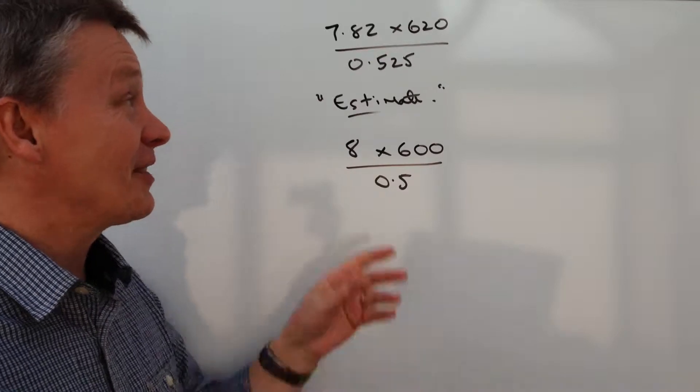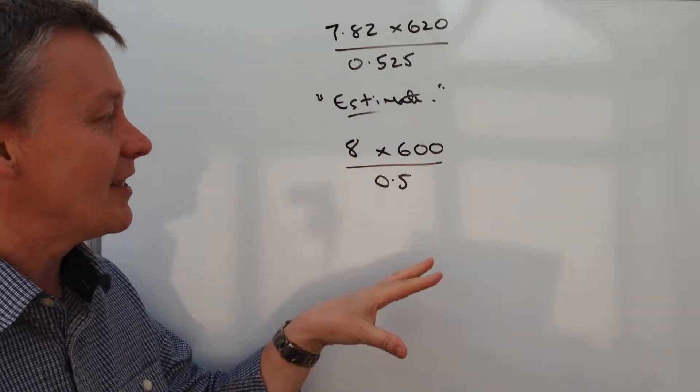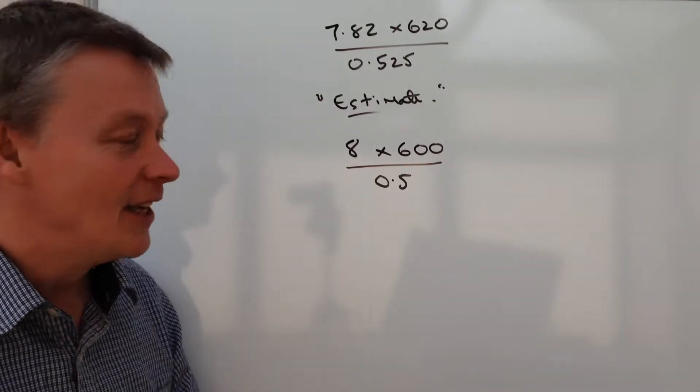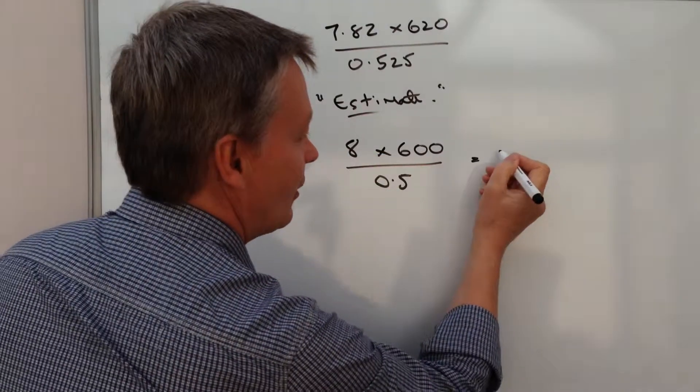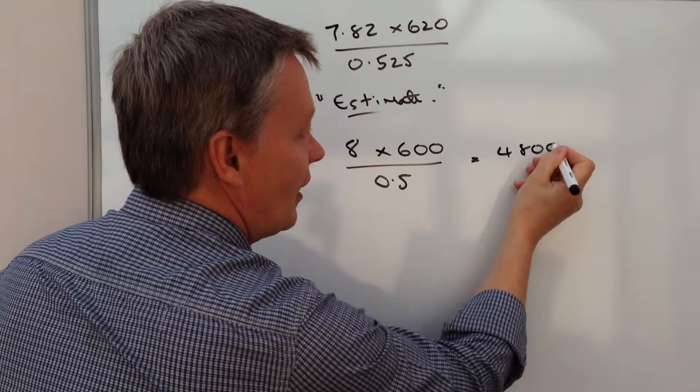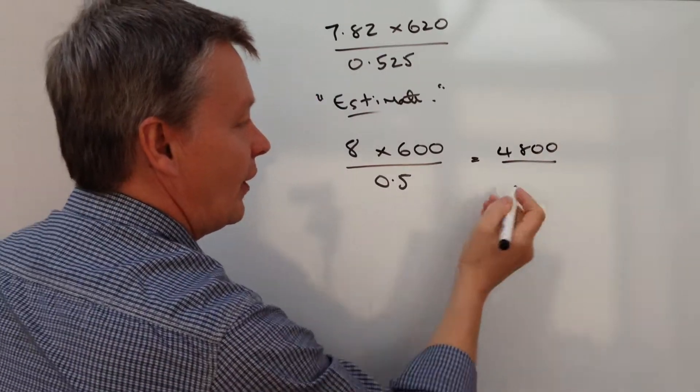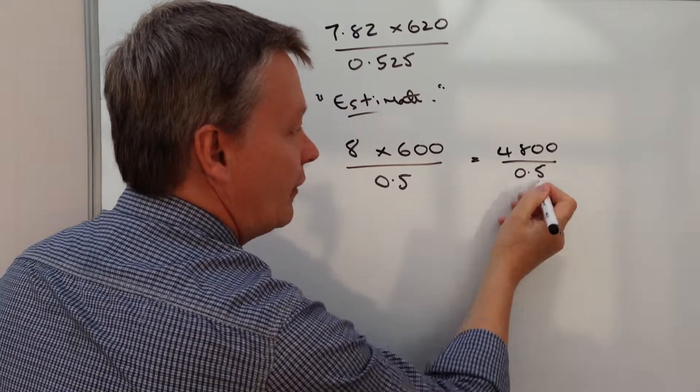I haven't got a calculator with me, so I don't know how close it's going to be, but nevertheless it'll give you a very good idea. So if we multiply along the top, I've got 8 times 600, which is 4,800, and that's going to be divided by 0.5.